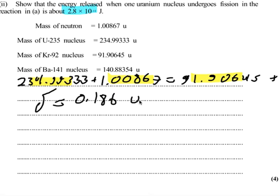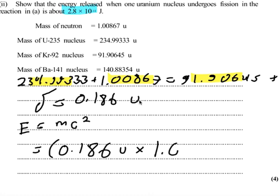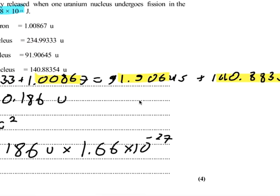Knowing the mass defect, we can convert it into an energy with the famous equation E equals MC squared. That mass is not in SI units, though. So we need to convert 0.186 AMU into kilograms by multiplying by the conversion 1.66 times 10 to the negative 27 kilograms per AMU. Then we multiply by the speed of light squared, 3 times 10 to the 8th squared.